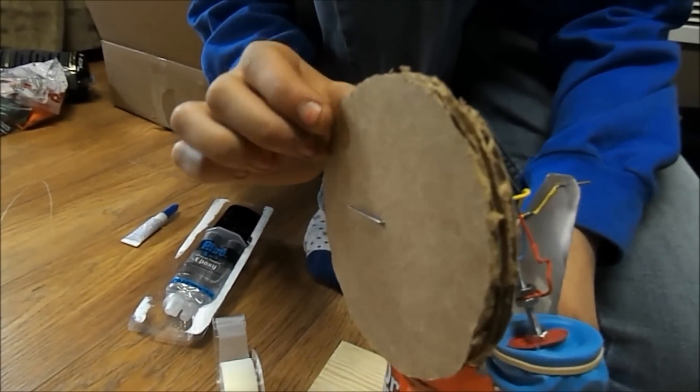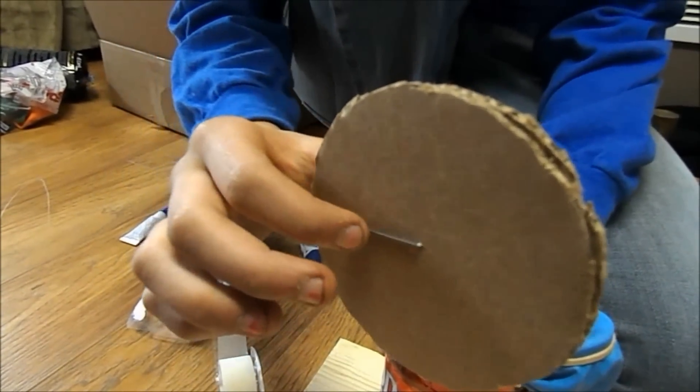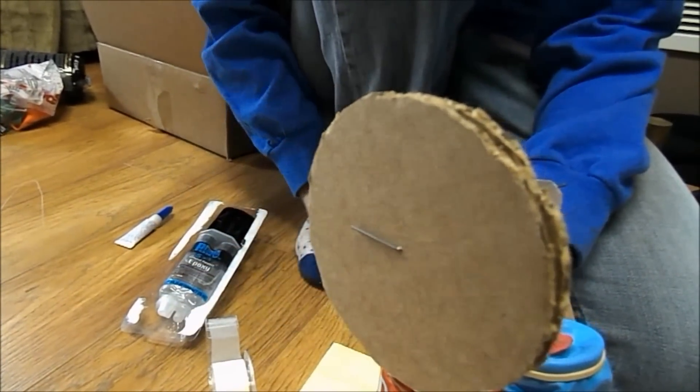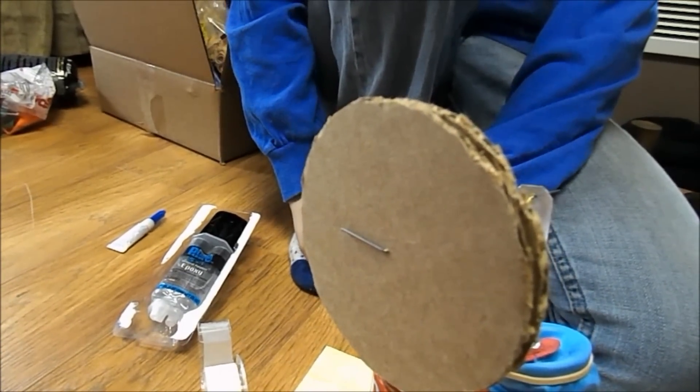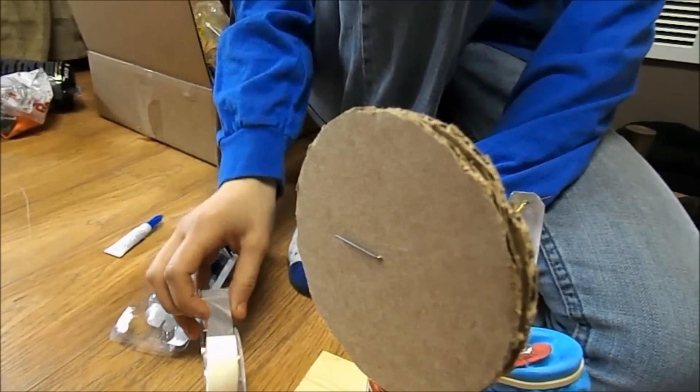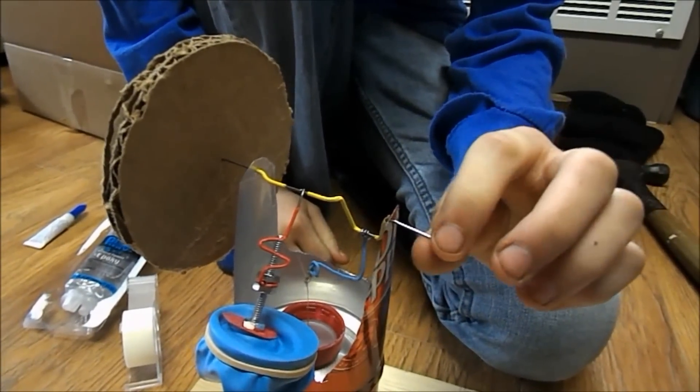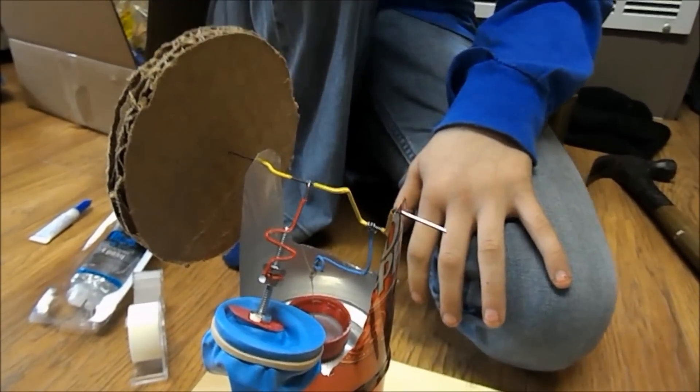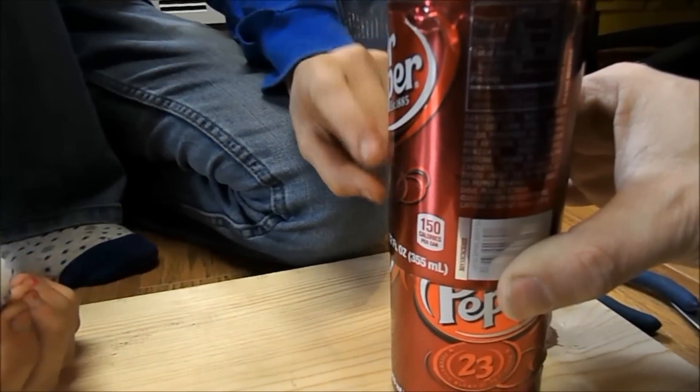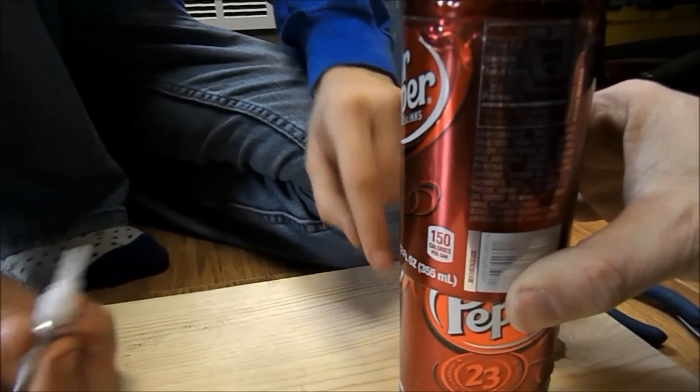We put the cardboards on and then we bent the shaft over so that they don't come off. And then you tape it. You have to bend this too. You glue the top cans to this bottom can.